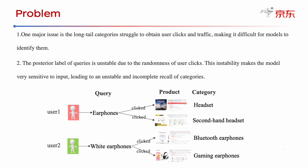The second problem is that the posterior label of a query is unstable due to the randomness of user clicks. For example, when a user searches for earphones, he may click on labels such as headset and wired headset.